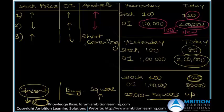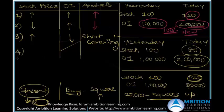Short covering does not give a directional buy signal. It only tells us that the market may have reached a bottom and might not fall below this level. You should not make a bullish or bearish call based on this alone. The analysis is simply that people who were short think it may not fall further and are covering their shorts by going long — but that does not mean you should also go long.